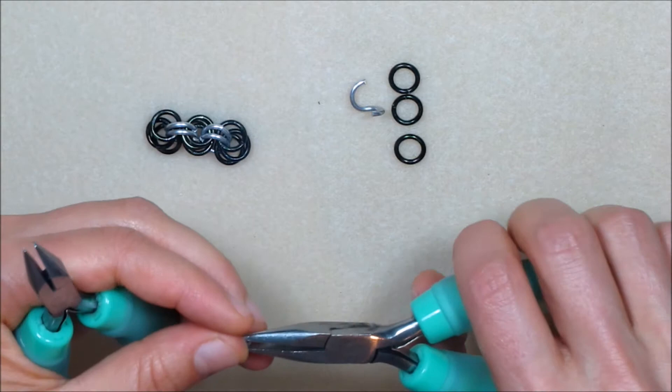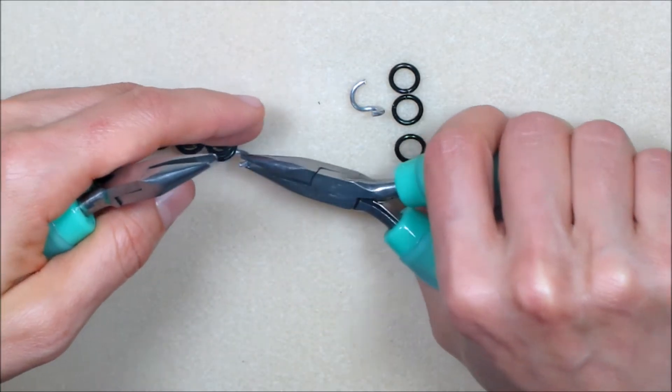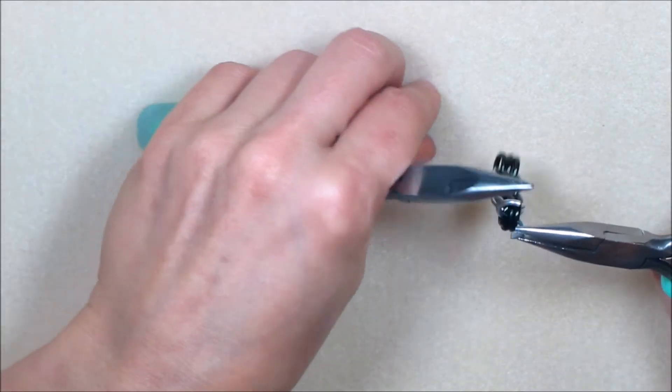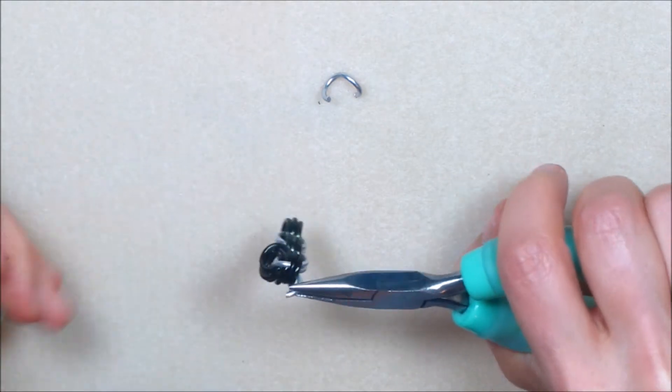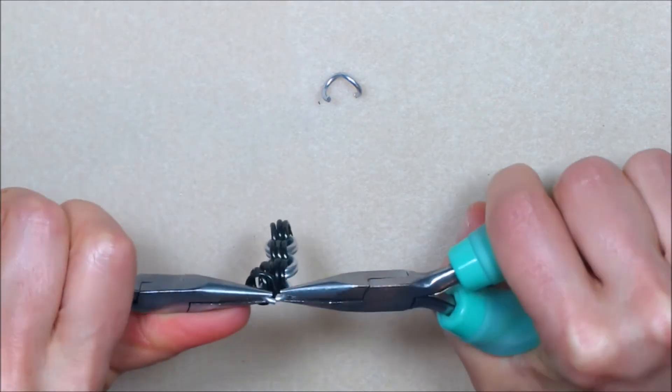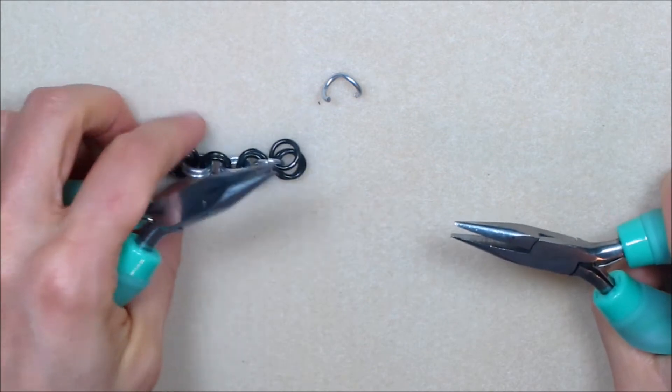Pick up one of the inner rings from set 3. Run it through all three of the most recently added rings. Before closing, place all three rings from outer set 4 on the open inner ring.